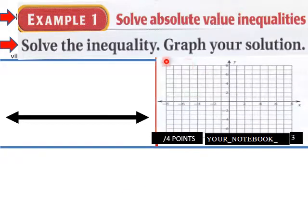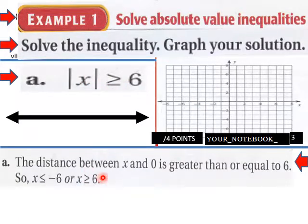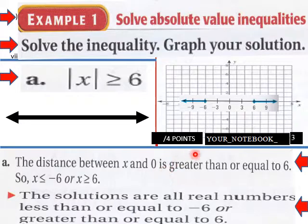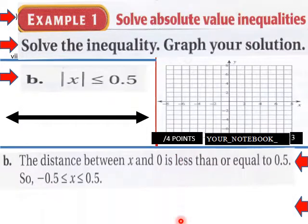Solve the absolute value inequality and graph your solution. |x| is greater than or equal to 6. The distance between x and 0 is greater than or equal to 6, so x is less than or equal to negative 6 or x is greater than or equal to 6. This graph goes in two different directions. The solutions are all real numbers less than or equal to negative 6 or greater than or equal to 6.